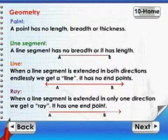Line: When a line segment is extended in both directions endlessly, we get a line. It has no end points.